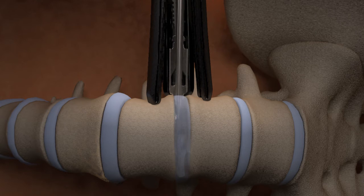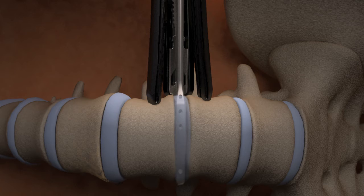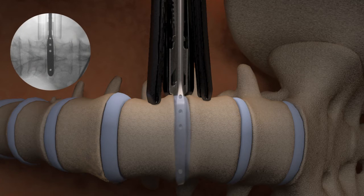Select the appropriate width implant trial. Initiate implant trialing with the 8 millimeter tall implant trial. Impact the trial into position such that the distal tip of the trial reaches the contralateral edge of the disc space. Use AP fluoroscopy to ensure good positioning.